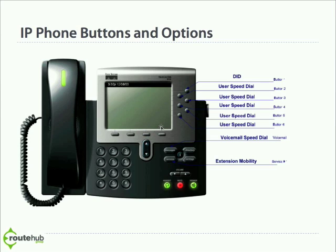If you need to do a speed dial and it's on the second button, simply press it and it will perform that action. These buttons are your line appearances, and the number of lines depends on the phone model. For this 7960, there are six line appearances where the first is typically used for the DID or extension, and the rest can be used for user speed dials or other specific DID numbers or extensions, depending on what templates are configured on your system.